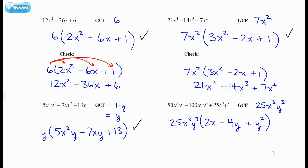Let's do a mental check. Multiply this in my head. I would get 50x⁴y³. Check. Multiplying this in my middle term, I would get negative 100x³y⁴. Check. And then this times y², I would get 25x³y⁵. Perfect.